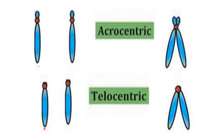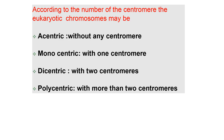Telocentric chromosome: the centromere is located at one end of the chromosome, at the terminal part. The telocentric chromosome may be rod-shaped during anaphase. According to the number of centromeres, eukaryotic chromosomes may be: acentric (without any centromere), monocentric (with one centromere), dicentric (with two centromeres), or polycentric (with more than two centromeres).